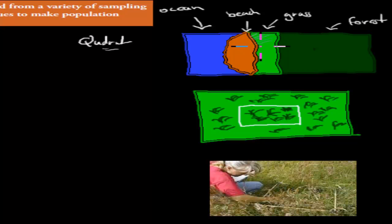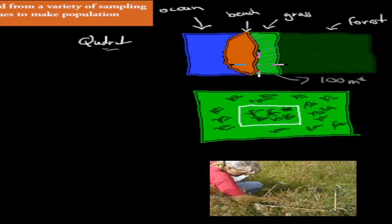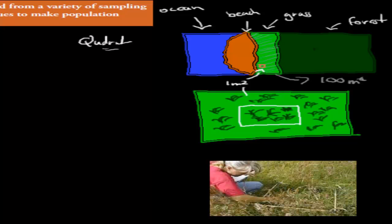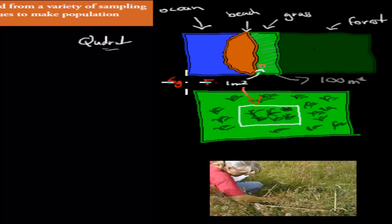With a quadrant, you measure out the total area — say this grassland is 100 square meters. Then you take a small area, like a square of one square meter, and place it somewhere in that region. That one square meter is one-hundredth of the whole area. You then count what's inside — say six grass shrubs in that one square meter.